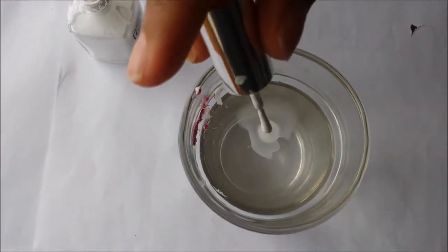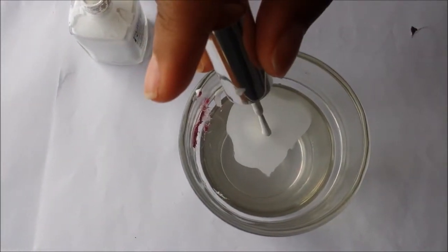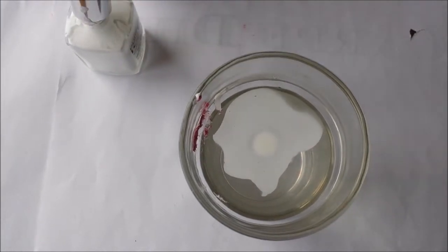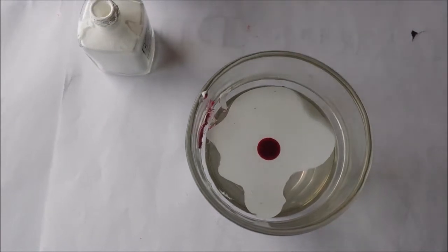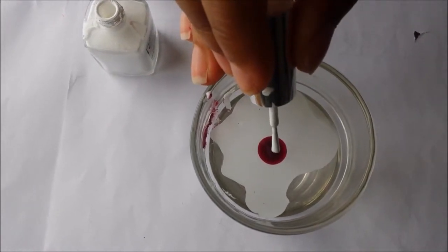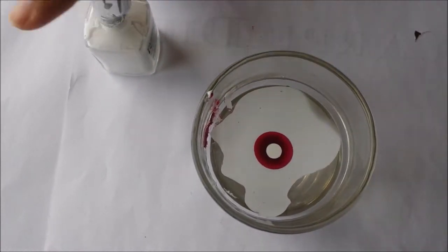Next get a cup of room temperature filtered water. Then get two colors of nail polish. The nail polish I recommend is one neutral color and the other one like a pink, red, or purple color. Here I have white and a burgundy magenta color.